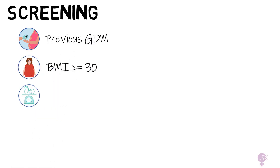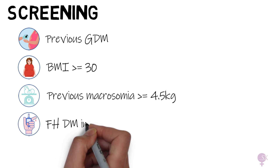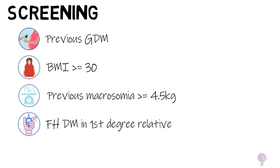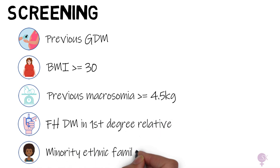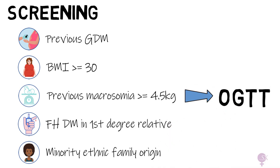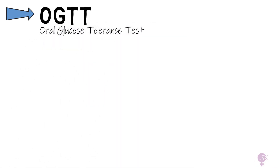Who shall we screen? Like all other screening programs, for it to be effective, we screen the section of the population which are at higher risk. This covers patients with one of the following: previous GDM, BMI greater than or equal to 30, previous macrosomia weighing 4.5 kilos or more, a family history of a first degree relative with diabetes, and minority ethnic groups. All of these patients are screened for GDM with an OGTT — an oral glucose tolerance test — performed at 24 to 28 weeks.